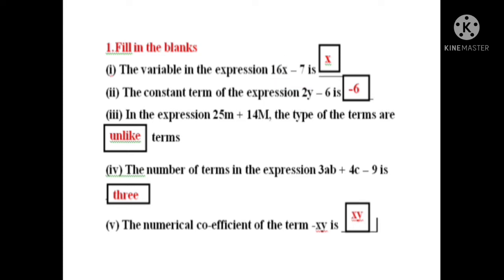Next question: the constant term of the expression 2y minus 6. Here y is the variable and the coefficient of y is 2. The term without a variable is the constant term. The minus 6 has no variable, so the constant term of the expression is minus 6.